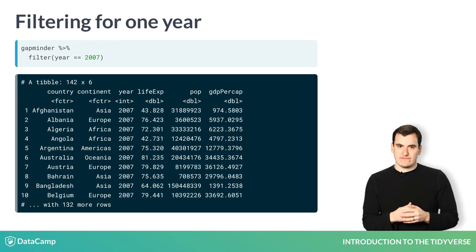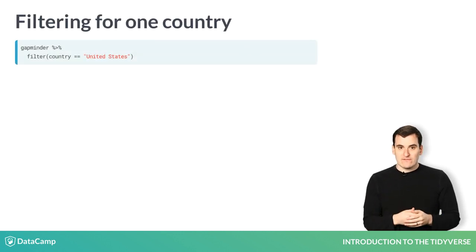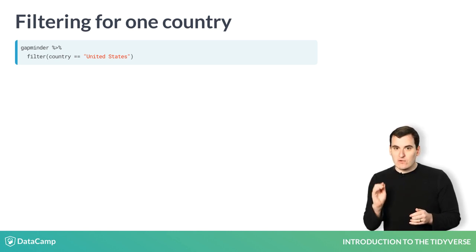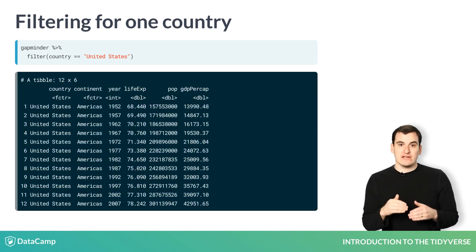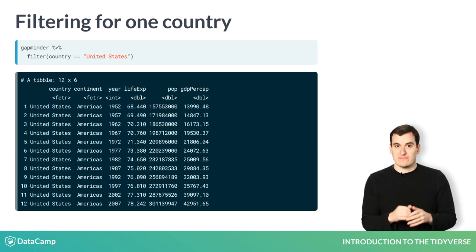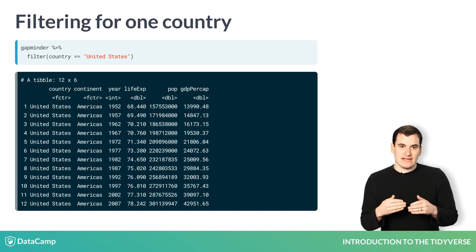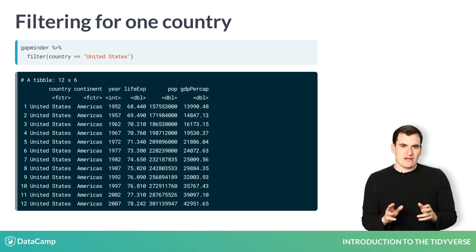You could choose another condition to filter on besides the year. For example, suppose we wanted to get only the observations from the United States. We would write this as filter(country == "United States"), resulting in only the 12 observations from that country. The quotes around United States are important — otherwise R won't understand that the words United and States are the content of a text variable, as opposed to variable names. You didn't need quotes around a number like 2007, but you do around text.